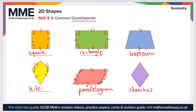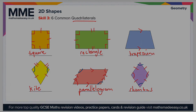Finally we have a rhombus. You can think of a rhombus as a squashed square, because all of the sides are equal. There are also two pairs of equal angles which are opposite each other — the blue angles are equal and so are the red angles.